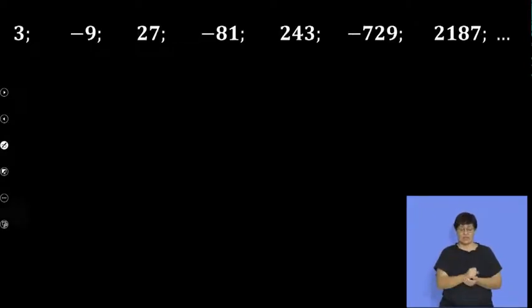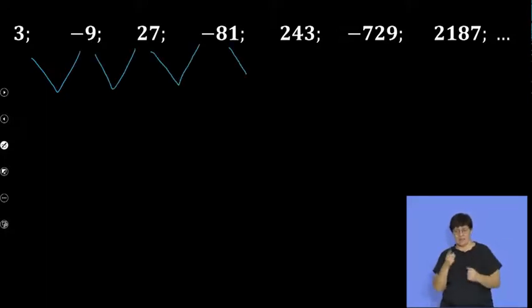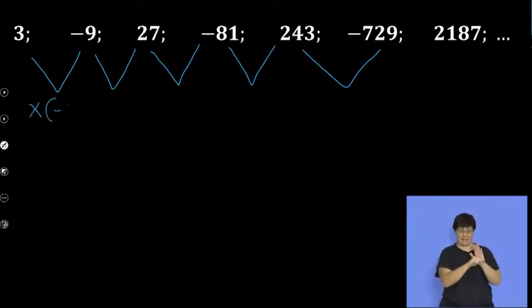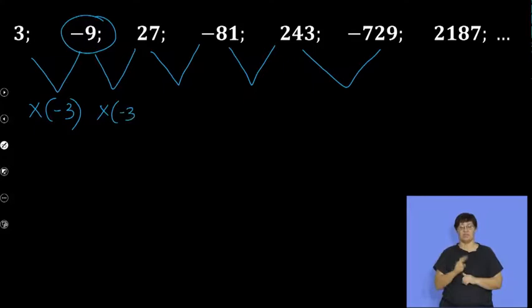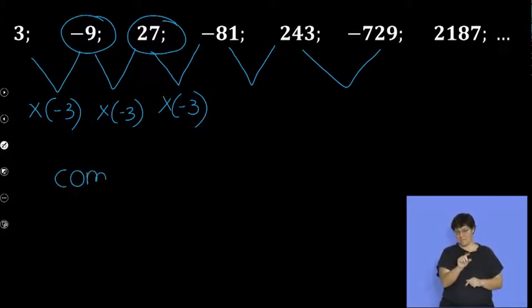We've got a pattern that goes 3, negative 9, 27, negative 81, 243, negative 729, and 2,187. If we are looking for a number that each term is multiplied by to get the next term, we can actually see that each term has been multiplied by negative 3 because 3 times negative 3 is negative 9. Negative 9 times negative 3 is 27. 27 times negative 3 is negative 81. So for this pattern, I can actually see that my common ratio is negative 3.